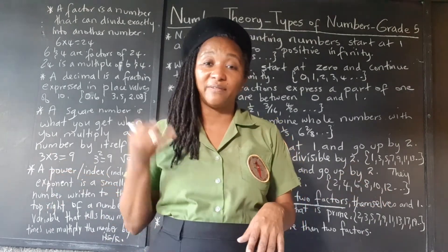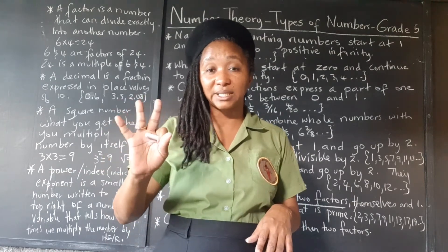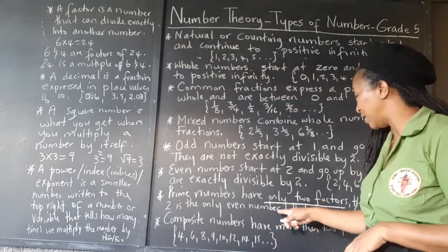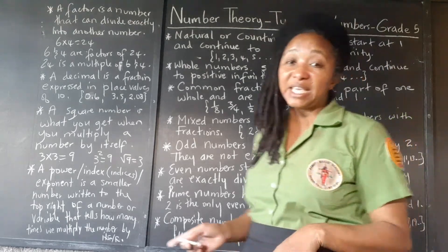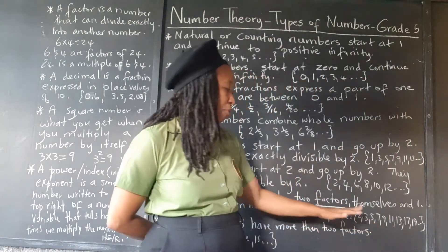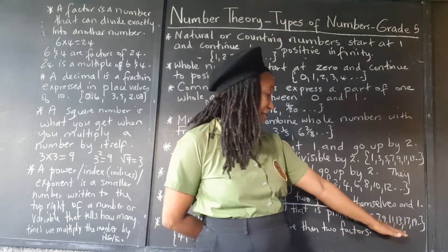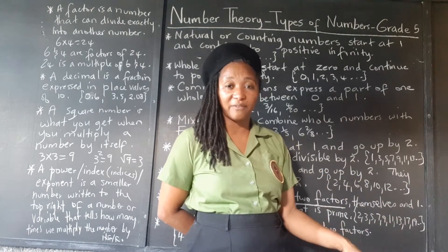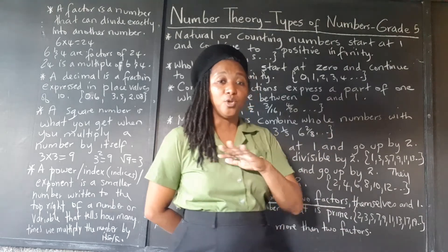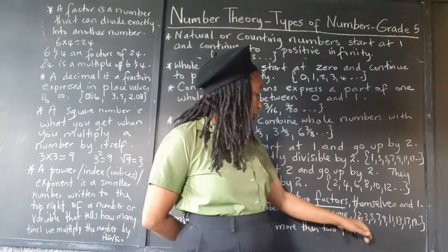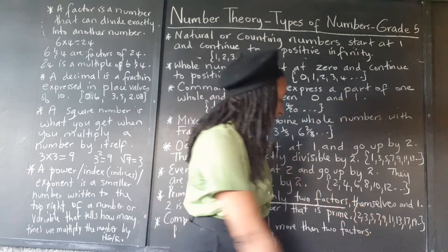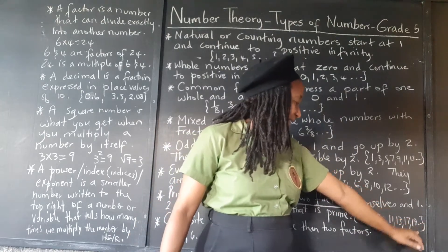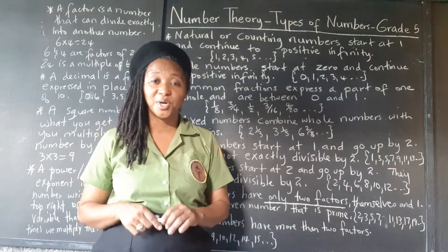All other even numbers will have themselves, one, and two that can go into them — plus some might have even more factors. So two is the first prime number and it is the only prime number that is even. This is the first set of prime numbers — all these numbers have only two numbers that can go into them. So two, three, five, seven, eleven, thirteen, seventeen, and nineteen are all prime numbers.